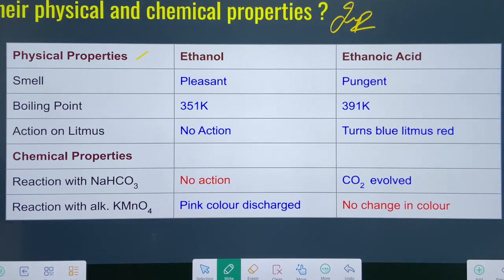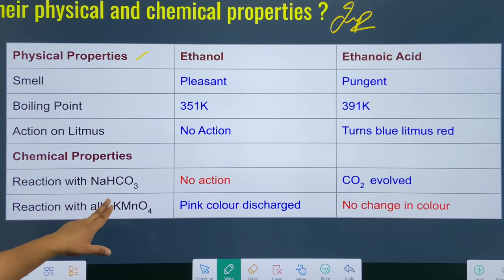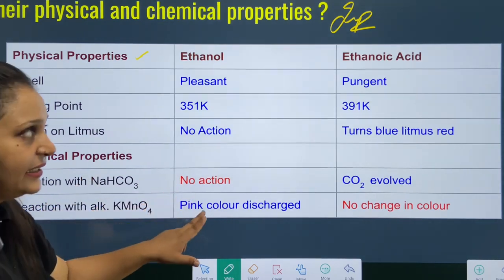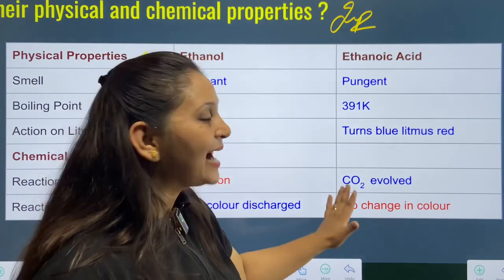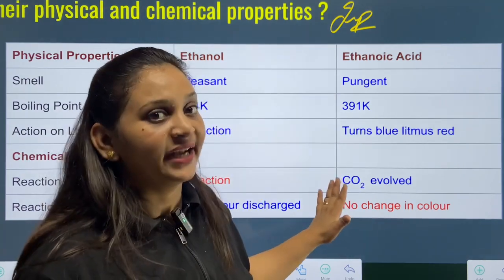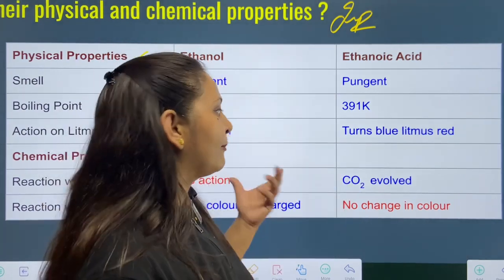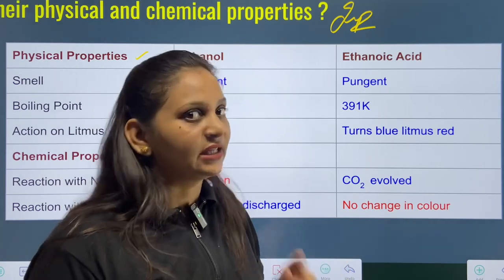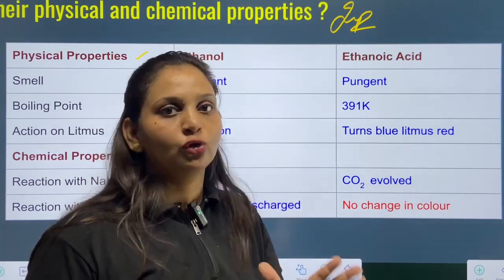In chemical properties: ethanol does not react with sodium bicarbonate, also known as baking soda. While ethanoic acid reacts with sodium bicarbonate and carbon dioxide gas evolves. If you want to understand these reactions in detail, a video link has been provided where I have explained both ethanol and ethanoic acid.